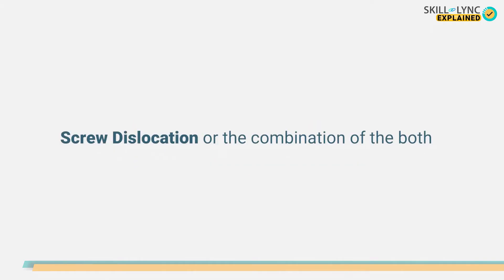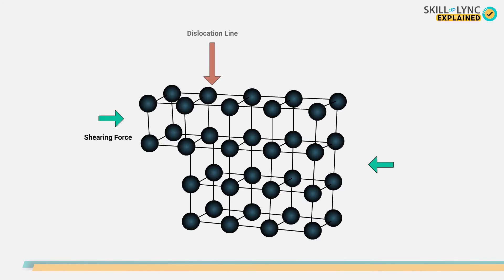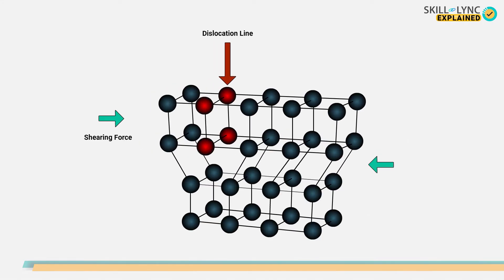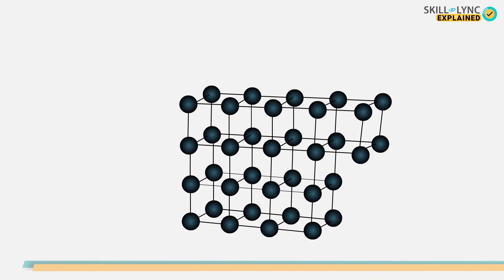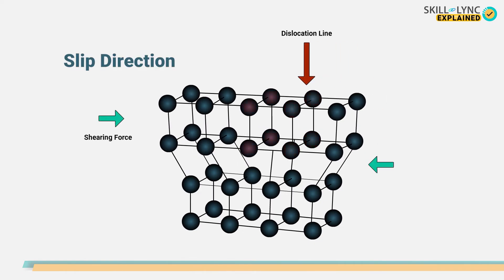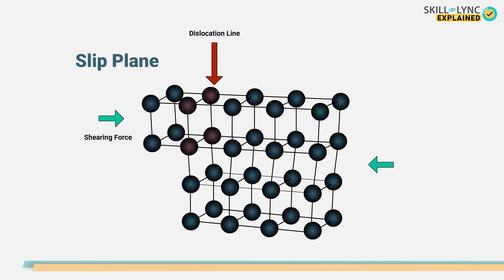The mechanism of slip deformation looks similar to the caterpillar motion, where a hump moves over the body of the caterpillar. In slip, the distances moved by the atoms during deformation will be the same throughout.